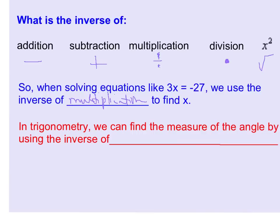Because we know this is 3 times x, so the opposite or inverse operation is divide by 3. So if we divide both sides by 3, we get our answer x equals negative 9.